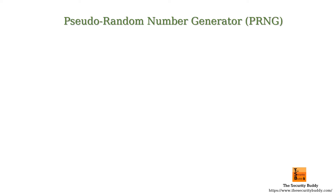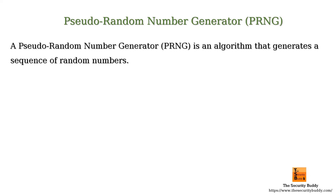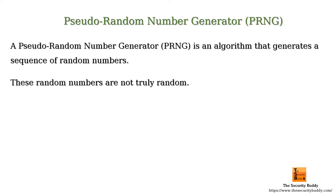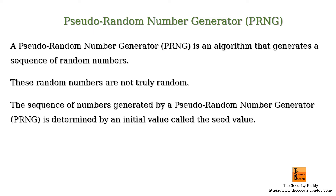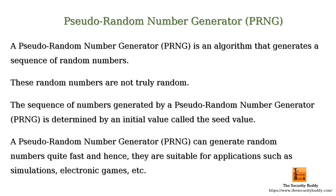A pseudo random number generator, on the other hand, is an algorithm that generates a sequence of random numbers. These random numbers have properties closer to those generated by a true random number generator, but they are not truly random. The sequence is determined by an initial value called the seed value, which can itself be truly random.